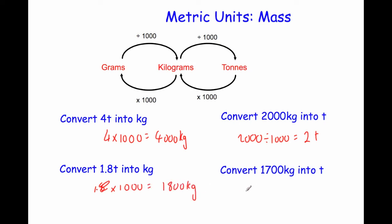And finally, convert 1,700 kilograms into tonnes. We divide by 1,000, moving the digits three places to the right. So 1,700 becomes 170, then 17, then 1.7. So the answer is 1.7 tonnes.